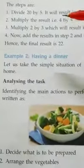Let us see how this problem can be done stepwise. The steps are: divide 20 by 5 first - division.